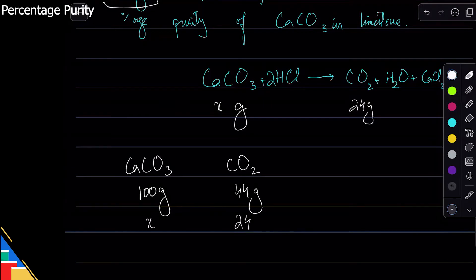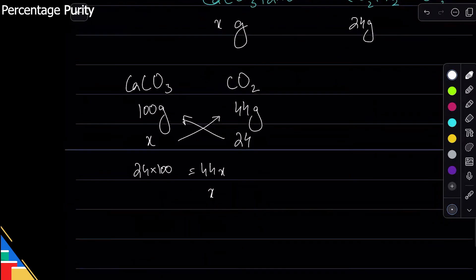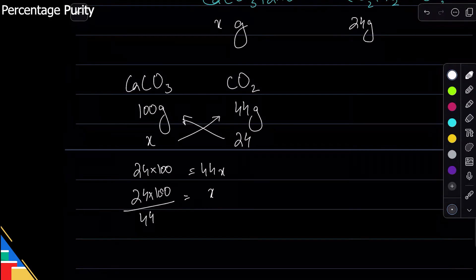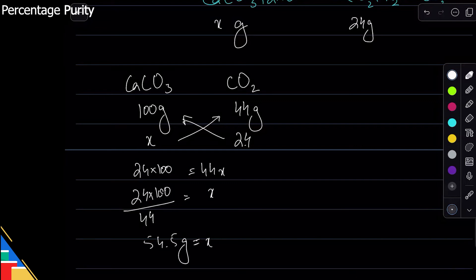I have 24, so how much of that do I have? So cross multiply: 24 times 100 is equal to 44x. x equals 24 times 100 over 44. Yeah, so I calculated, I got 54.5 grams. No wait, oh sorry, it was 2.4 in the question.